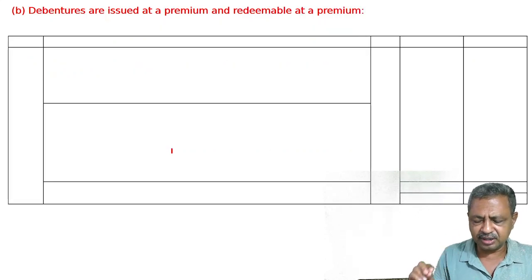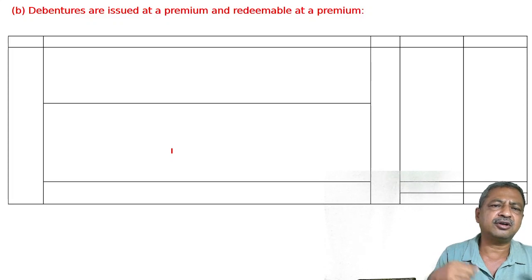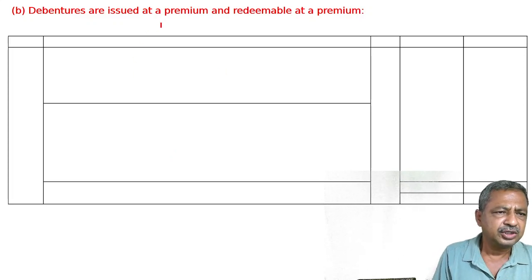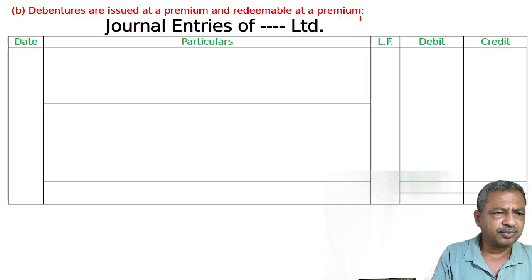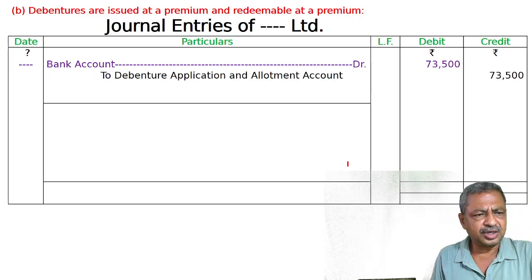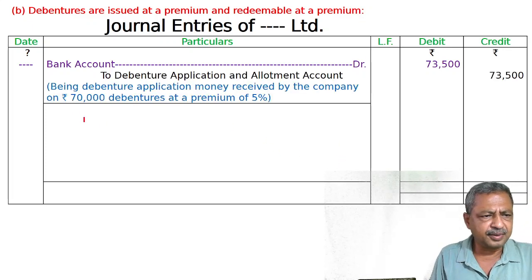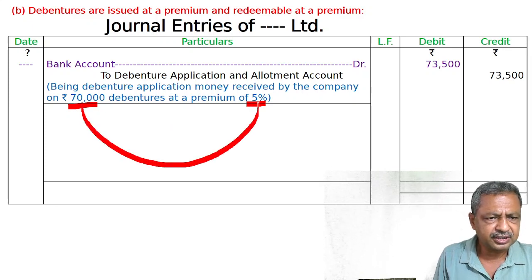Part B question: Rs. 70,000, 12% debentures of Rs. 100 issued at a premium of 5%, redeemable at 110. So 100 ke debentures 110 par redeem honge — issued at a premium of 5% and redeemable at a premium of 10%. Bank Account debited 73,500.